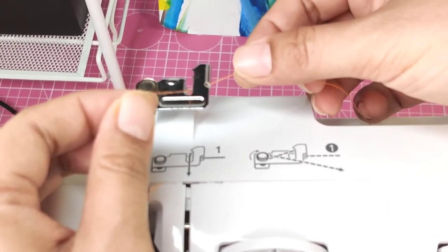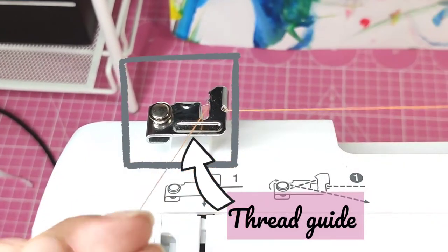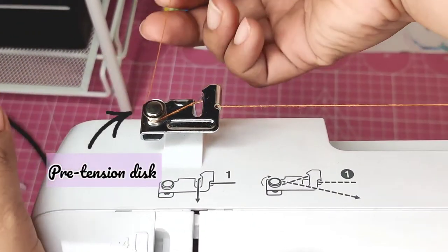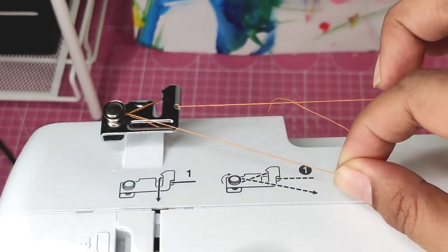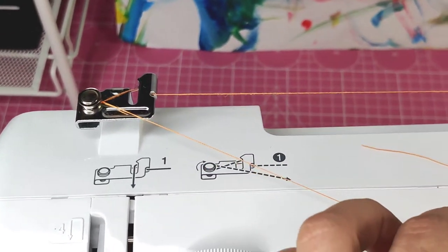Pass the thread through the gap and pull it towards you so it gets caught by that small springing hook. Wrap the thread around the pre-tension disc making a half infinity sign. Pull the thread completely. The position of the thread should be the same as the image encircled.